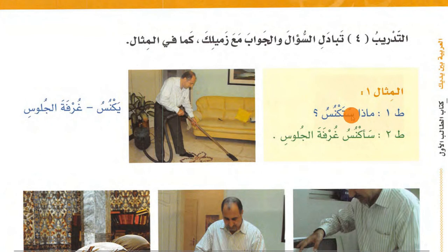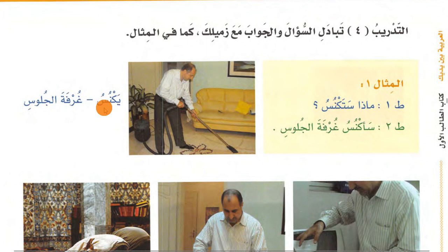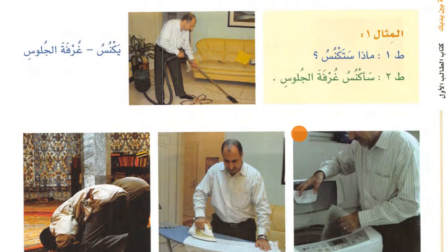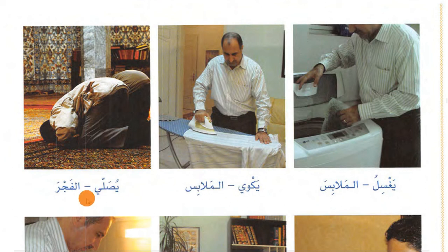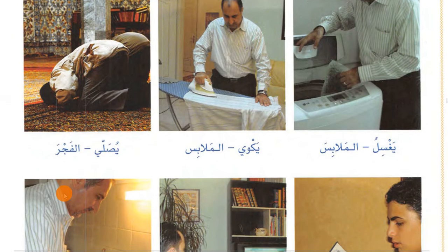Future tense with سـ (sa): يكنس means 'he is sweeping,' سيكنس means 'he will sweep.' تكنس - you are sweeping, ستكنس - you will sweep. أكنس - I am sweeping, سأكنس - I will sweep. ماذا ستكنس - what will you sweep? سأكنس حجرة الجلوس - I will sweep the living room. ماذا ستغسل - what will you wash? سأغسل الملابس. ماذا ستكوي - what will you iron? سأكوي الملابس. ماذا ستصلي - what will you pray? سأصلي الفجر.